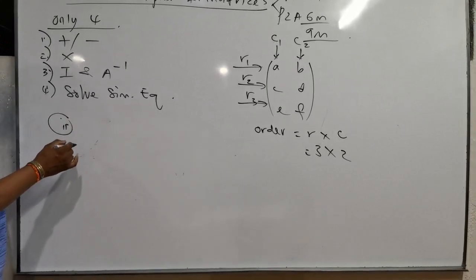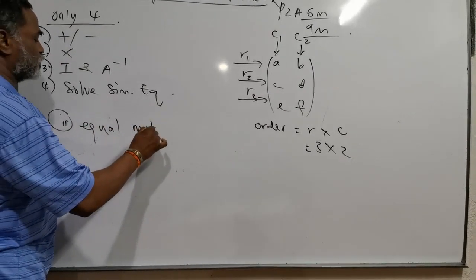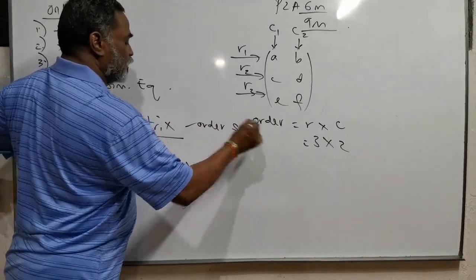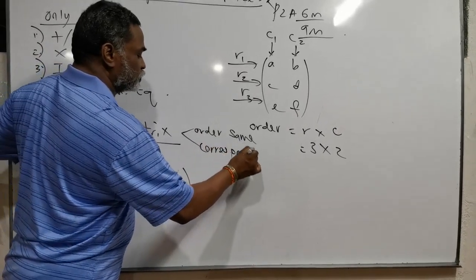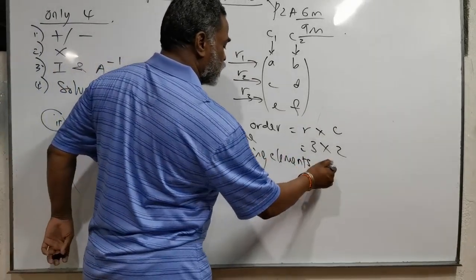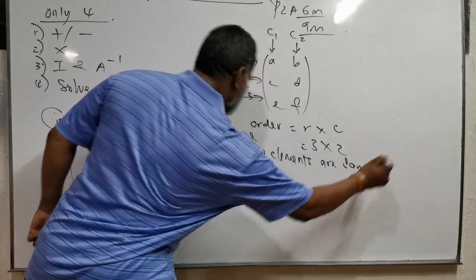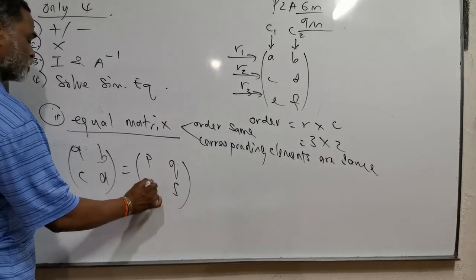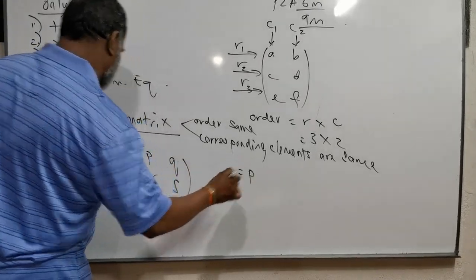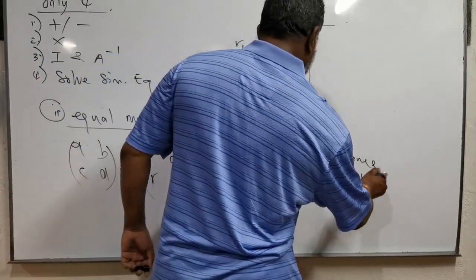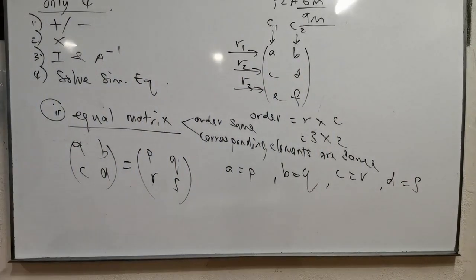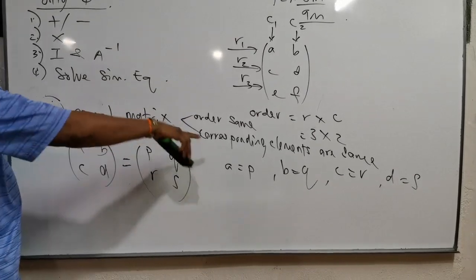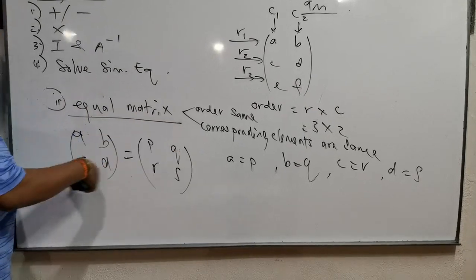Under introduction, you must also know the equal matrix — 'matriks sama'. Equal matrix means the order must be the same, and the corresponding elements must be the same. For example, if matrix [A, B; C, D] equals [P, Q; R, S], then A equals P, B equals Q, C equals R, and D equals S.